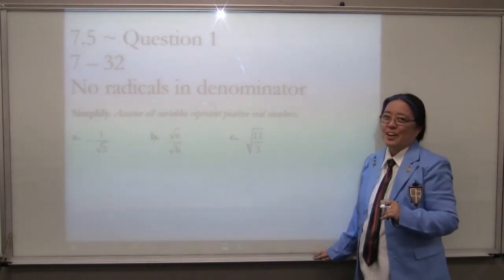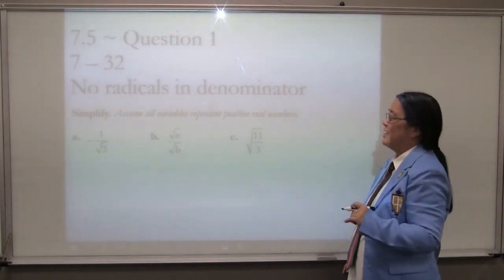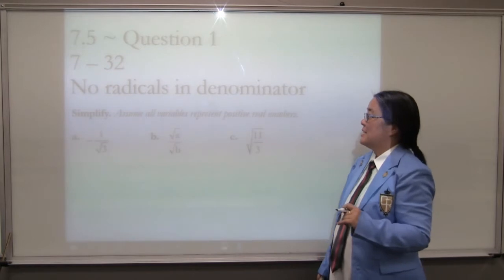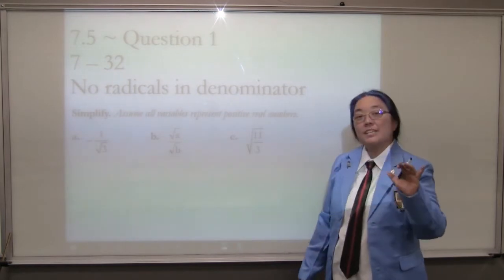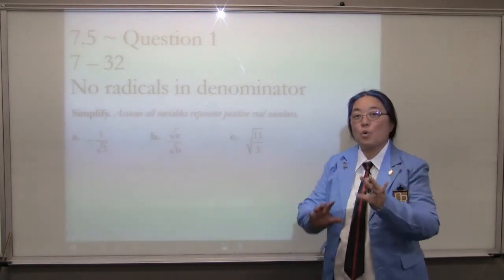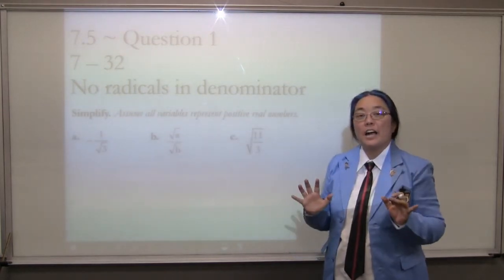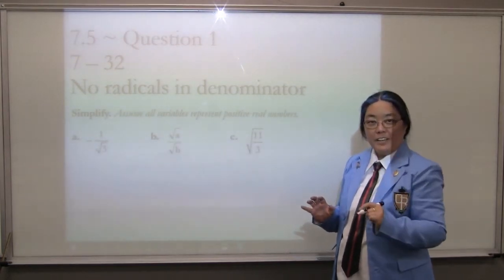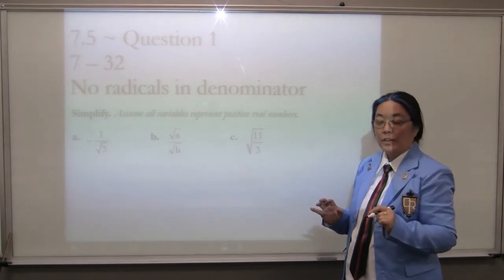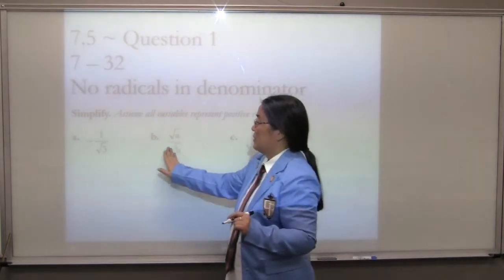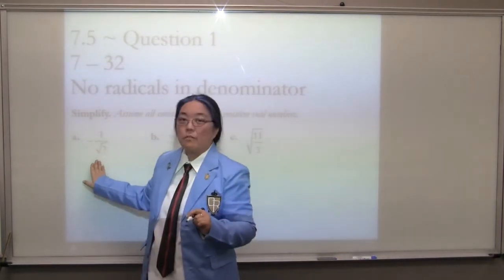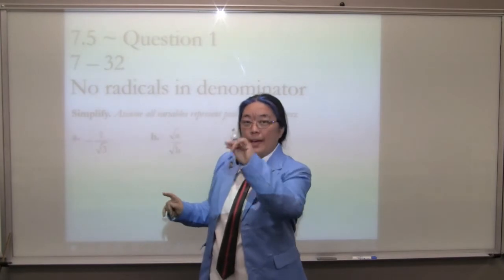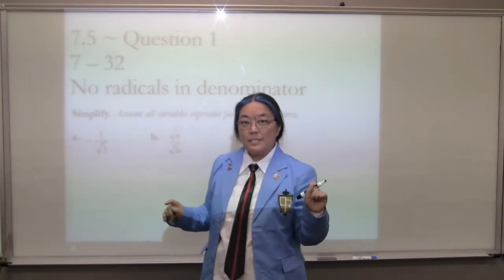Chapter 7, Section 5, Question 1: No Radicals in the Denominator. This is a section where we're spending the entire section on dividing with radicals. You'll notice that all of these have a radical in the denominator, and that is right out.